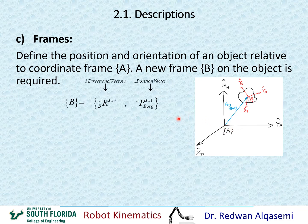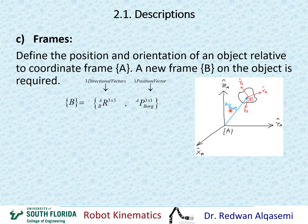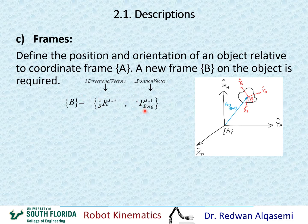We already know how to describe orientation through the rotation matrix — a 3×3 matrix that has three directional vectors. We also know how to describe the position of the origin of frame B using vector P relative to frame A. This vector P of the origin of B relative to frame A is a 3×1 vector. To describe frame B, we need both the rotation portion and the position vector of frame B relative to frame A.